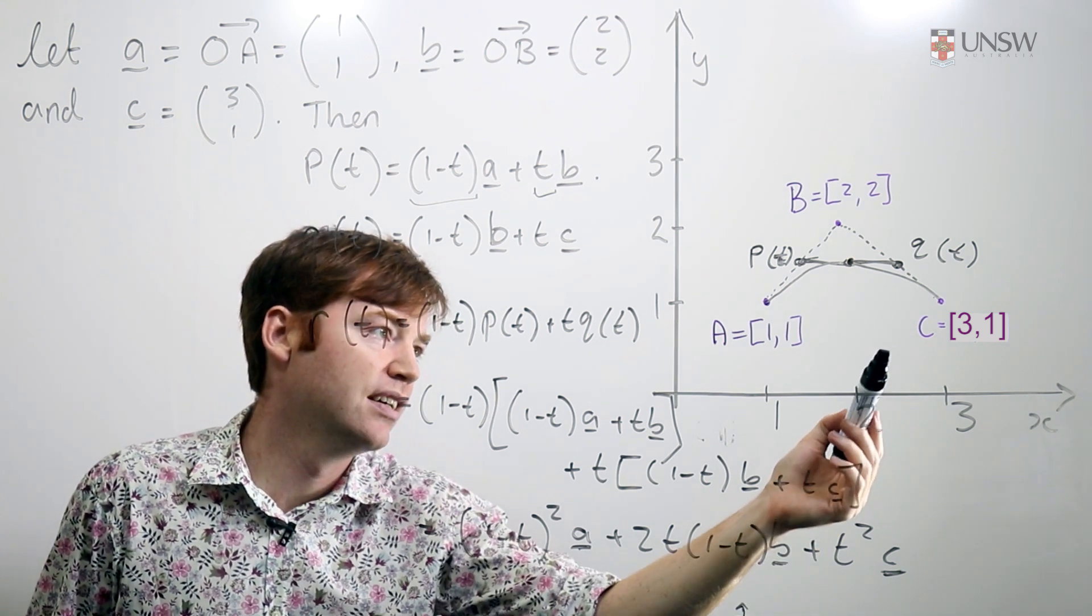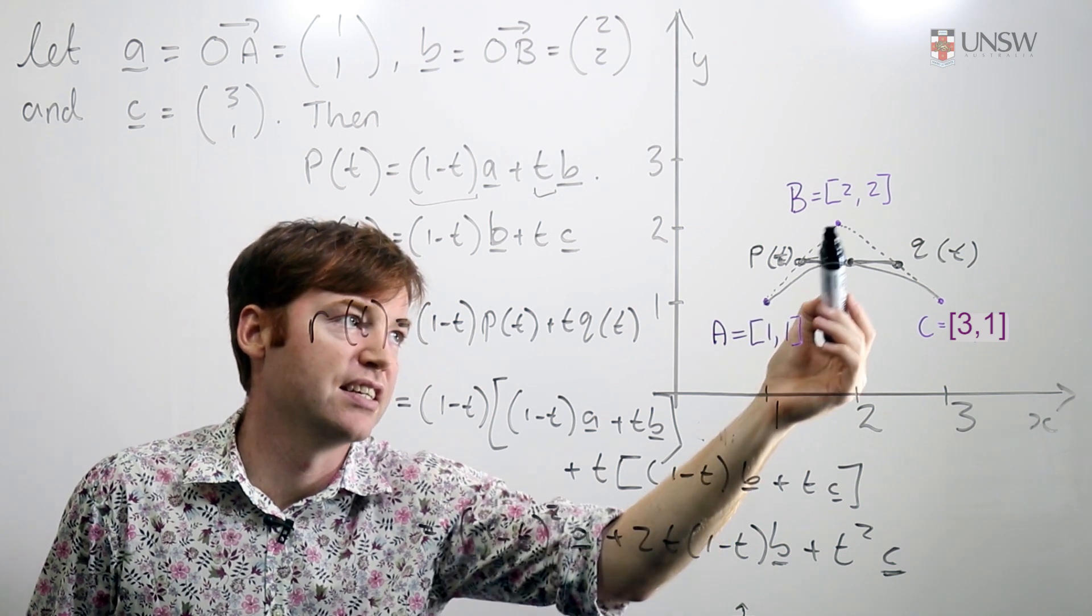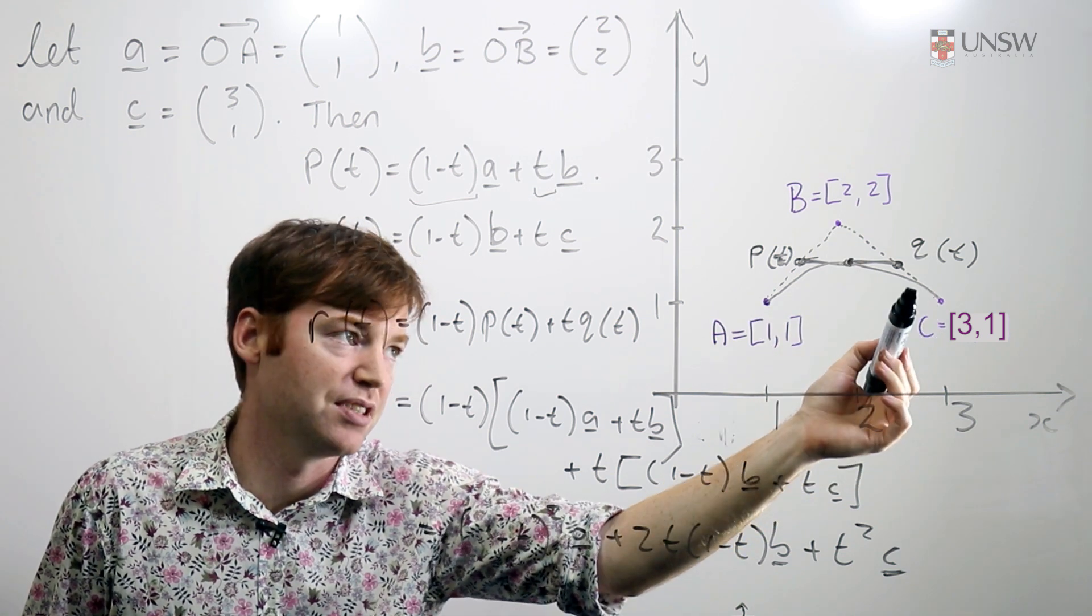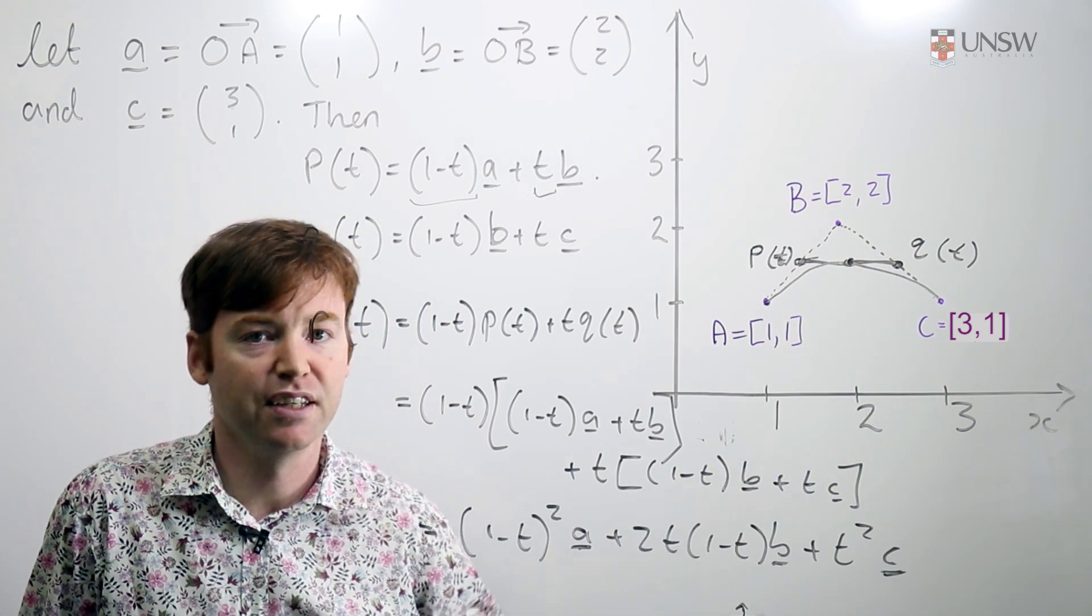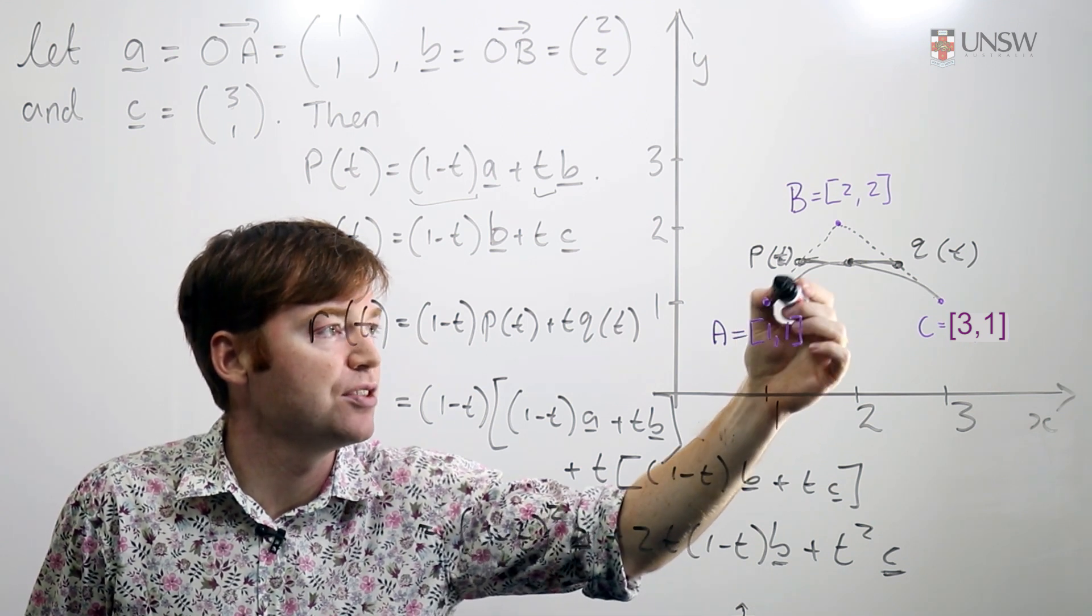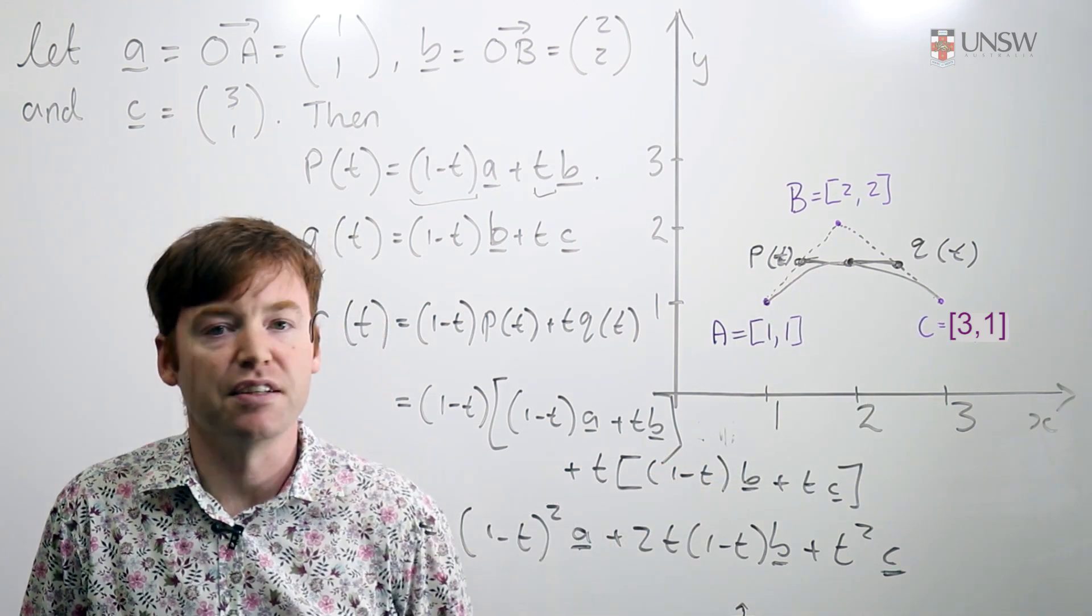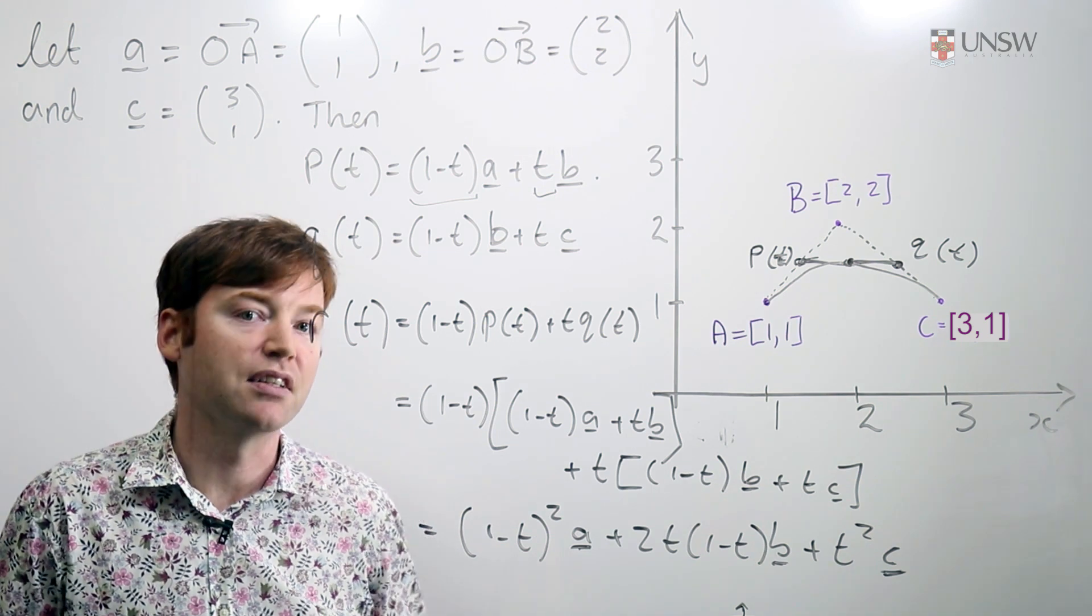When t is equal to 1, then you put 0 weight here, 0 weight here, and 1 weight here and of course the center of mass of the triangle is just in c. And as t goes from 0 to 1, this point r of t traces through the centers of mass of this triangle and gives you this lovely curve.